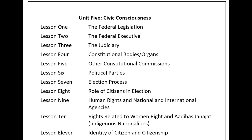Unit 5, Civic Consciousness, Lesson 11: Identity of Citizen and Citizenship. Citizenship is a legal document given by a state to its citizen to identify them as a citizen. Citizenship is the valid base of identification. Citizenship and nationality are different things: the relation of citizenship may break, but the relation of nationality does not. There are two ways to get citizenship: citizenship by descent, also called bloodline relation-based citizenship, and citizenship by virtue of birth, also known as soil or land relation-based citizenship.